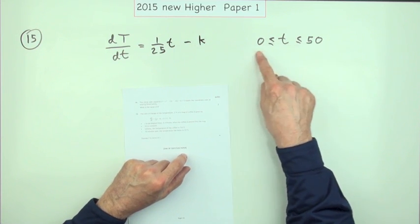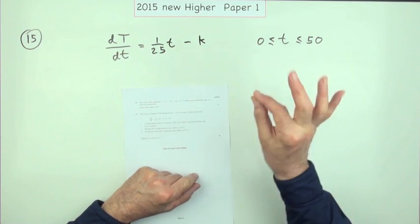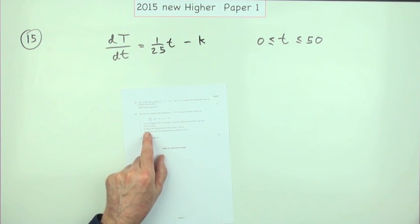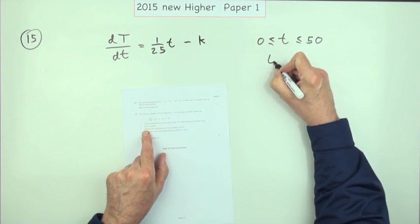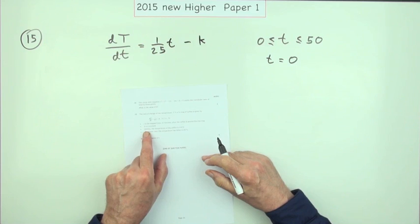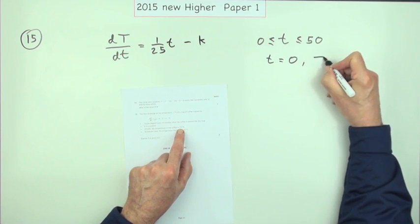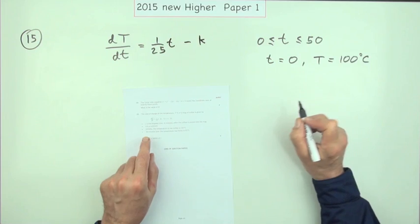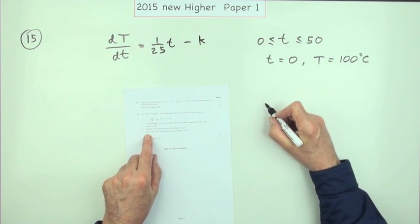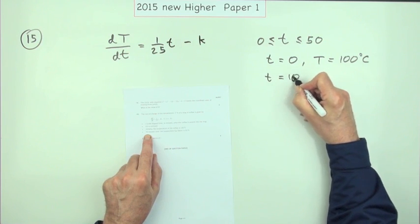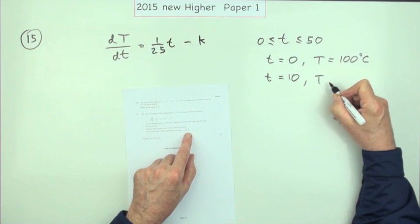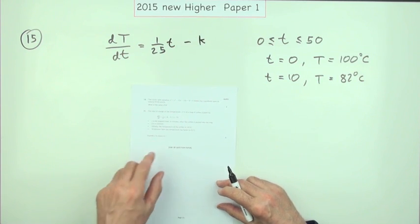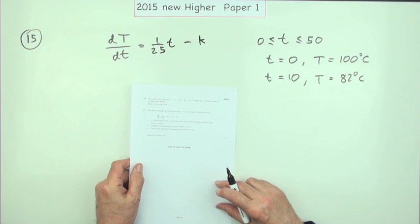This is the temperature of that coffee if you were to watch it for up to 50 minutes, measuring its temperature all the time. K is a constant. Initially - that says t equals zero, that means at the start - at t equals zero, the temperature is 100°C, which is unlikely when you pour it, but it doesn't matter. And 10 minutes later, when t equals 10, the temperature has fallen to 82 degrees. Express T in terms of t.